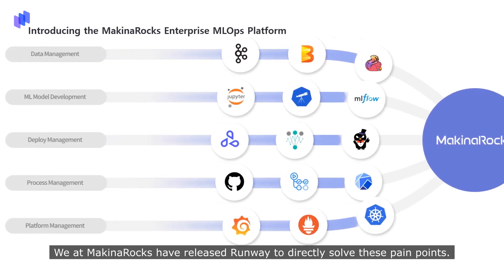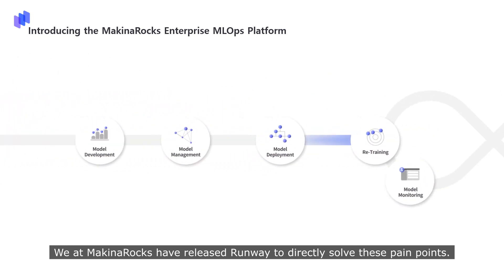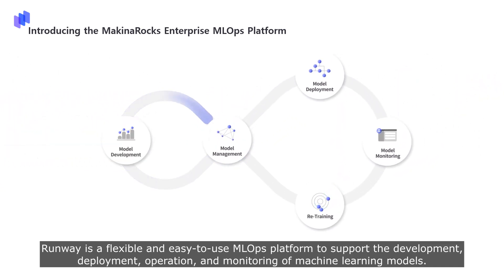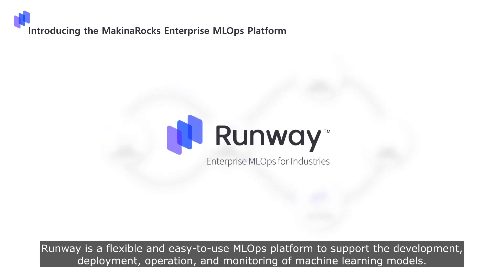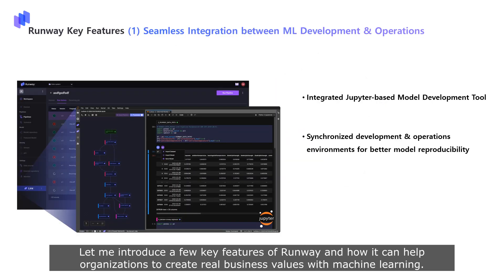We at Makina Rocks have released Runway to directly solve these pain points. Runway is a flexible and easy-to-use MLOps platform to support the development, deployment, operation, and monitoring of machine learning models. Let me introduce a few key features of Runway and how it can help organizations to create real business value with machine learning.